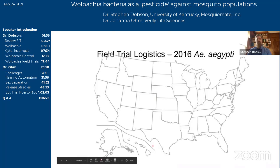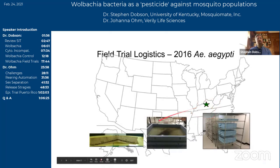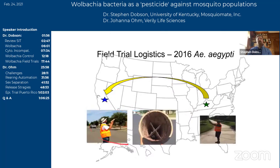Dr. Ohm is going to do a deep dive into what some of these trials look like. I'll just do a very quick overview. As you can imagine, in the initial work we focused a lot on logistics and very applied problem solving. We're based in Lexington, Kentucky — that's where we're rearing these mosquitoes — and yet some of our field work was taking place out of state. For example, in California, this is work done with the Consolidated Mosquito Abatement District in Fresno or Clovis. We had to develop approaches to rear, sex-separate, remove the females, and package these males so they could be shipped and released in California.